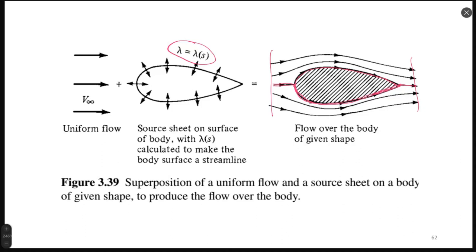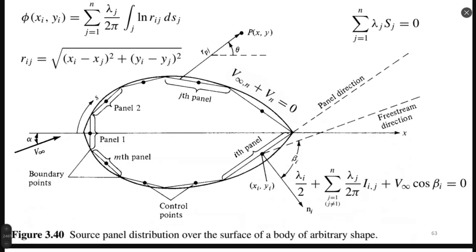We need to calculate what distribution of source strength prevents external flow from entering inside the profile. The amount of mass passing from entrance to exit remains the same; nothing is generated or consumed by the source. The source just resists flow entering inside, forming the streamline shape matching the airfoil. Since the shape of any airfoil cannot be described as a simple analytical function, we must transform from analytical to discrete numerical calculation.